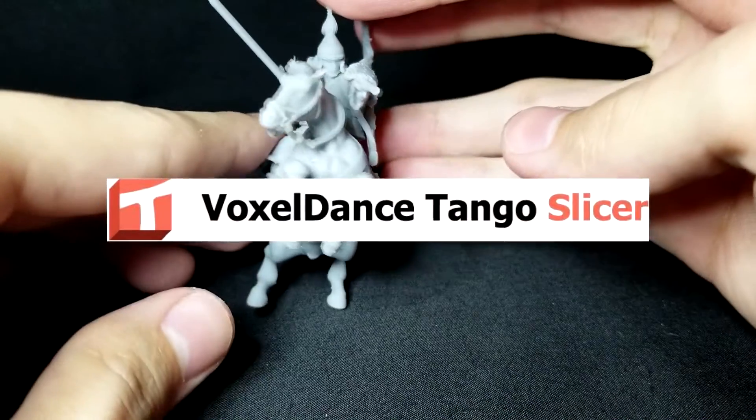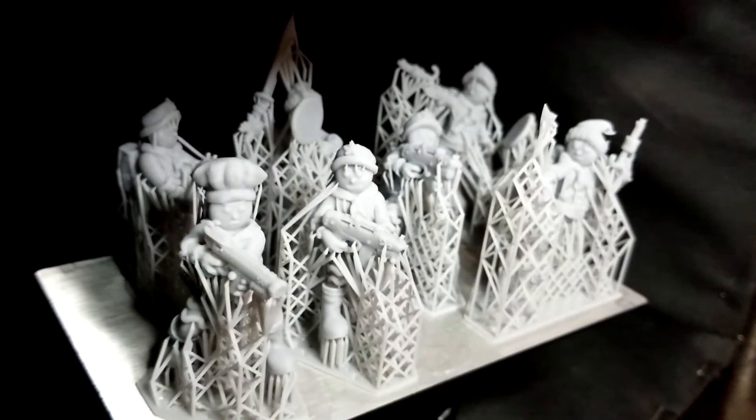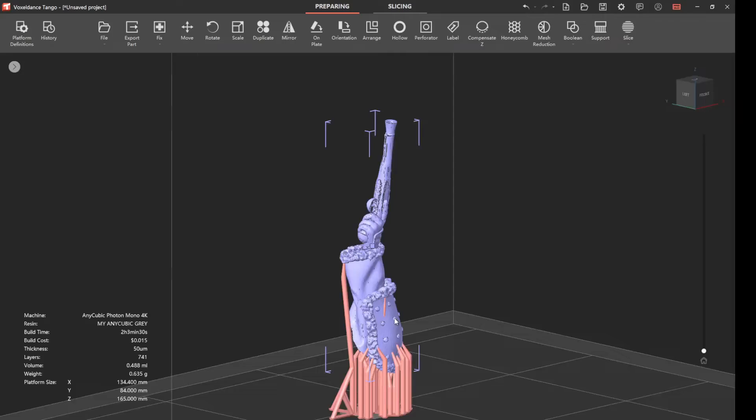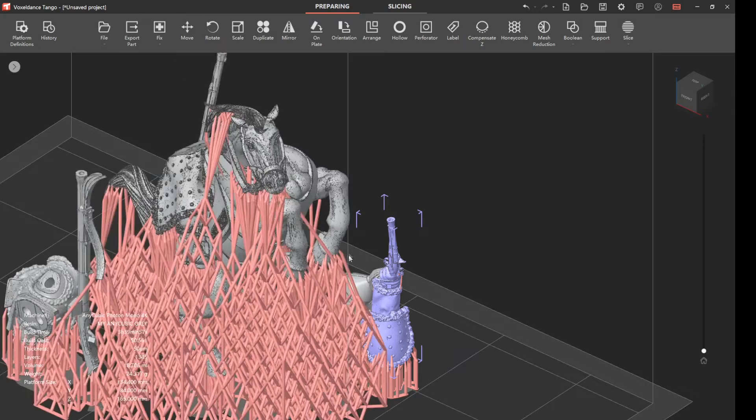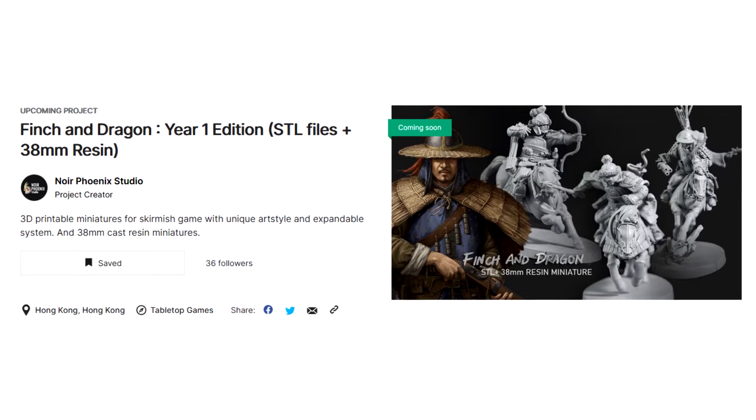Tango slicer does have a free trial, so I'd recommend you try it, see if you like it. I think the more that you play around with it, the more you'll see how powerful this voxel-based auto support algorithm is, and it could save you time preparing models for 3D printing. I'll also leave a link to the Finch and Dragon Kickstarter campaign that's launching soon.